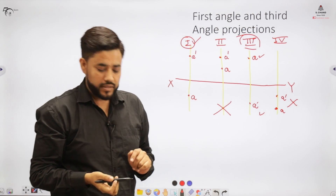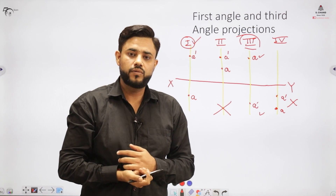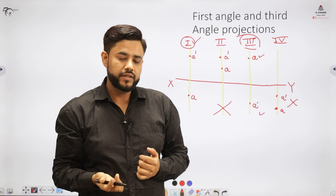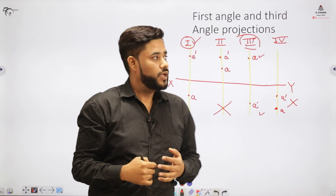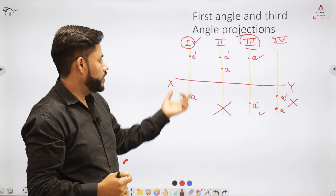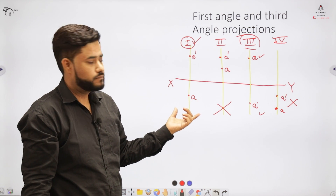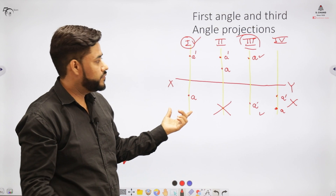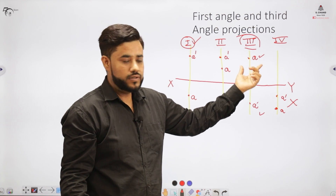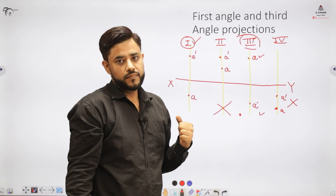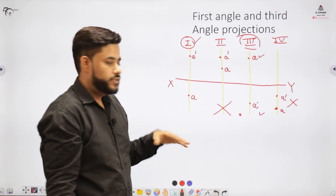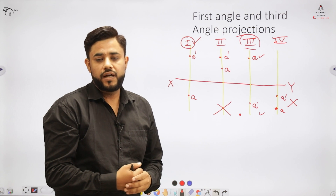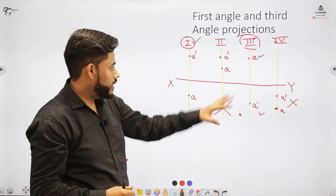In the initial part of the video, I raised a question about how drawings made in India differ from drawings seen in foreign countries. In India, we generally follow the first angle projection system, meaning we indicate the front view first and then the top view. But in foreign countries, they indicate the top view first and the front view later. This is the major answer to that question.